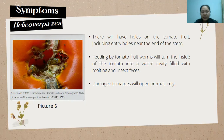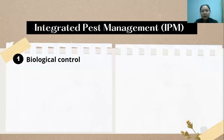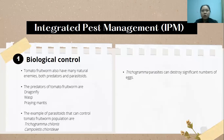The IPM methods for tomatoes: first is biological control, using parasitoids and predators. Examples of predators include dragonflies, wasps, and praying mantis. The parasitoid Trichogramma can destroy large numbers of eggs, making this control most efficient at the early stage of infestation.